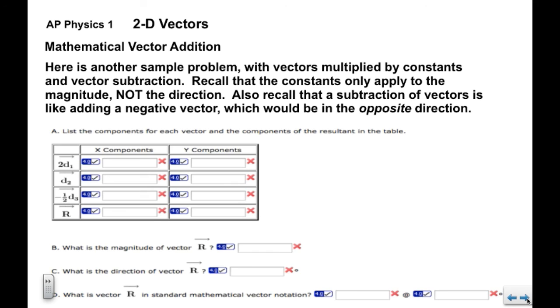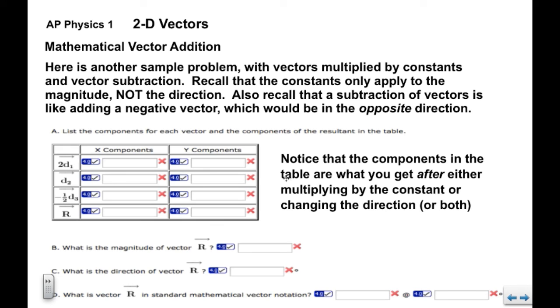So again, here's the table of components. Notice that the components in the table are what you get for each vector after you multiply by the constant or change the direction, or in the case of negative one half d3, you have to do both. You have to multiply by the constant and then change the direction.